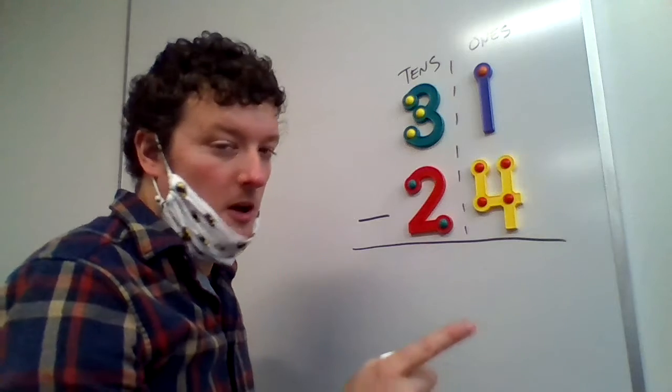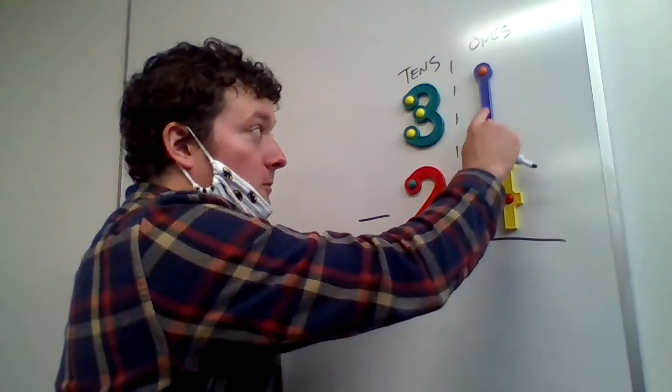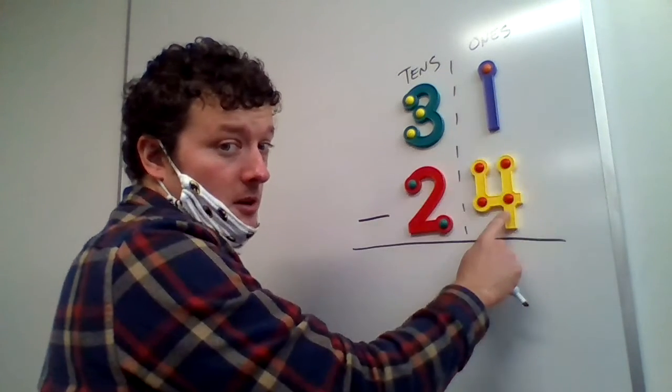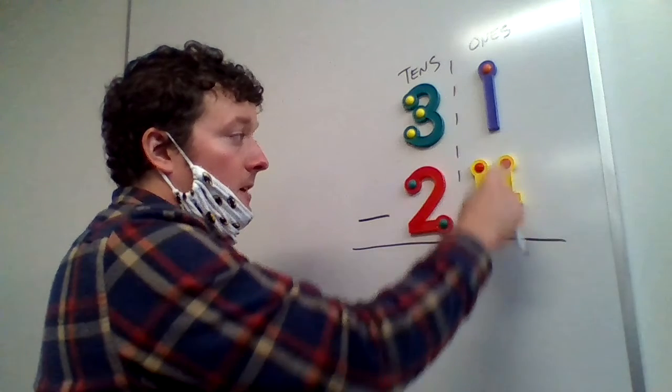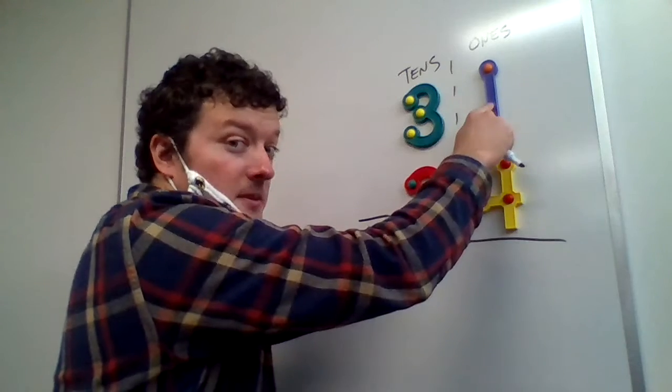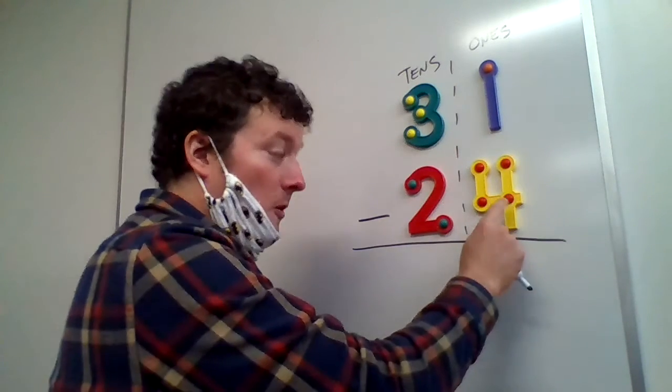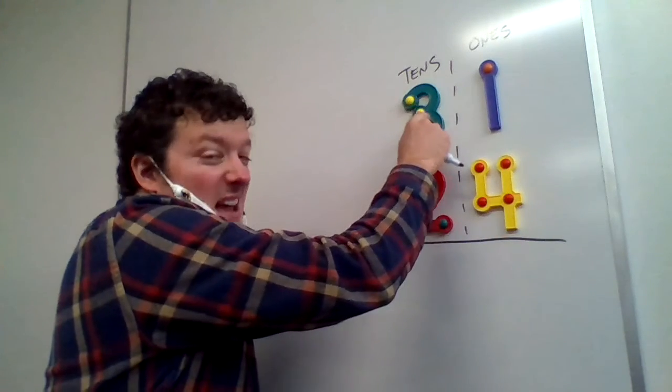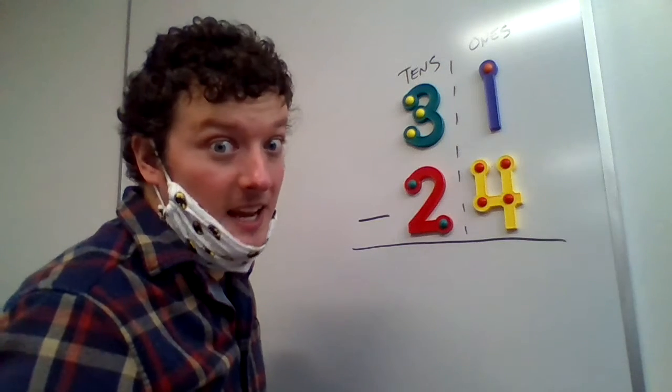Is the one bigger than the four or smaller? That's right. The one is smaller. So we're in trouble here because with subtraction, we can't have a small number on top. So if there's more on the floor or more on top, no need to stop. More on the floor.